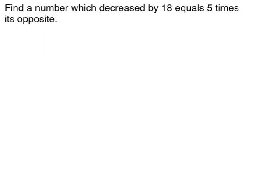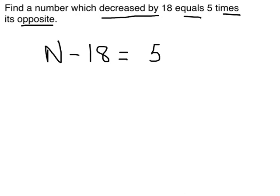This says find a number which decreased by, that means subtract 18 equals 5 times its opposite. Opposite means negative. If the number is a positive number, its opposite is going to be negative. So when you see opposite, you're going to think negative. So a number decreased by 18 equals 5 times the opposite of the number. Now I could have written that as 5 times negative N. If that helps you to see that a little bit clearer. I just chose to go ahead and do my multiplication and make it negative 5N.